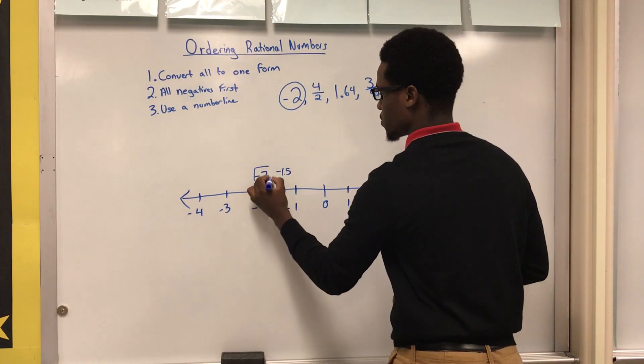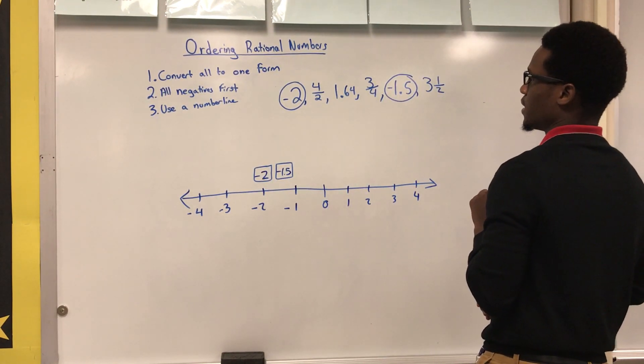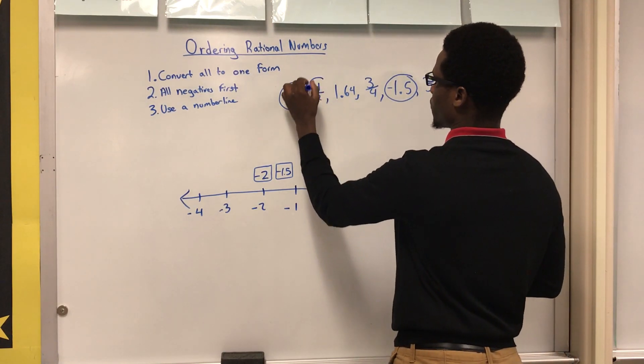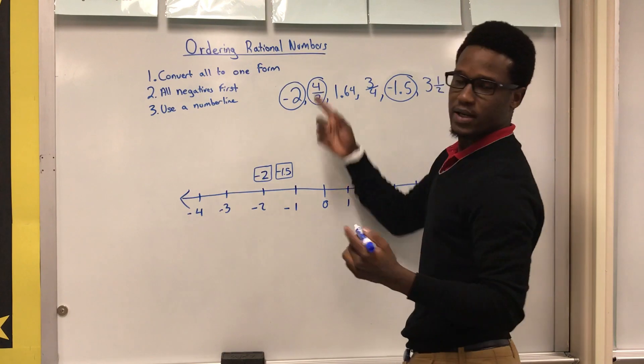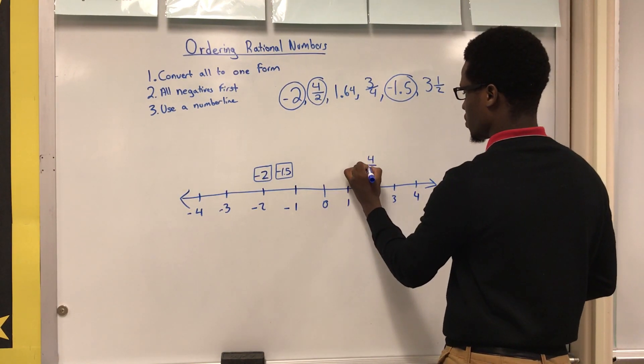Okay, so here's the first one, here's the second one. Next I'm going to figure out these fractions. Now it's four over two. If I go ahead and divide that, four over two is just two, so I'm going to put that over here. That's going to be four over two.